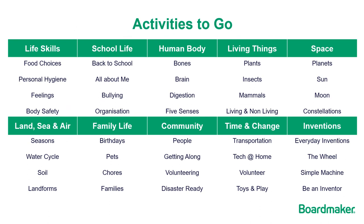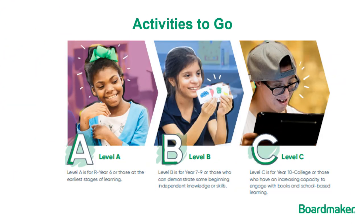There are 10 themes to choose from, all designed to broaden world knowledge and support the understanding of high-utility vocabulary. Every theme comes with four units of work, each designed to be a week of teaching and to dive into a big idea linked to the theme. Each unit of Activities to Go is differentiated to three levels of learning — from those at the earliest stages to those with an increased capacity to engage with books and learning.